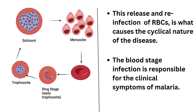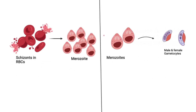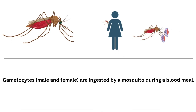While most of the merozoites burst out of red blood cells, a tiny minority will stay in the red blood cells and develop into male and female gametocytes. These gametocytes can only develop further inside a mosquito. So when a human who has malaria is bitten by a mosquito, the mosquito may pick up these Plasmodium falciparum gametocytes. If this occurs, the gametocytes develop via their sexual stage into gametes.